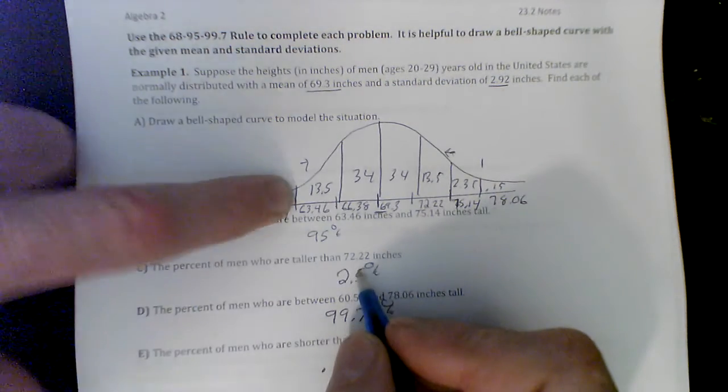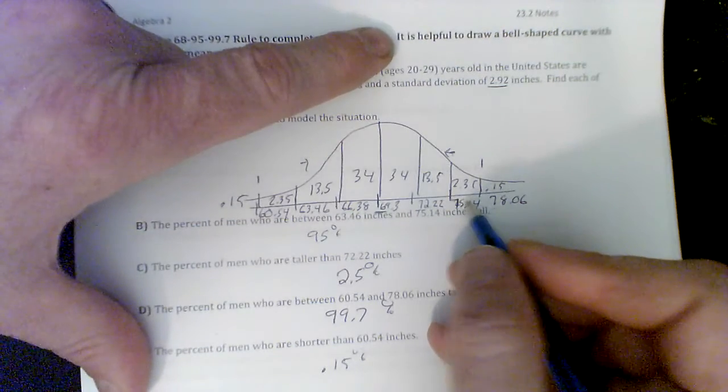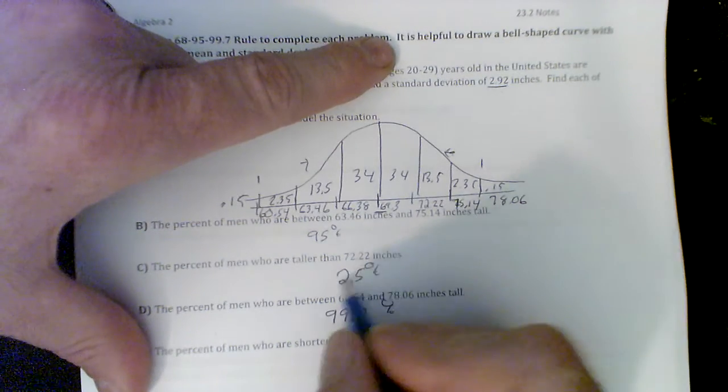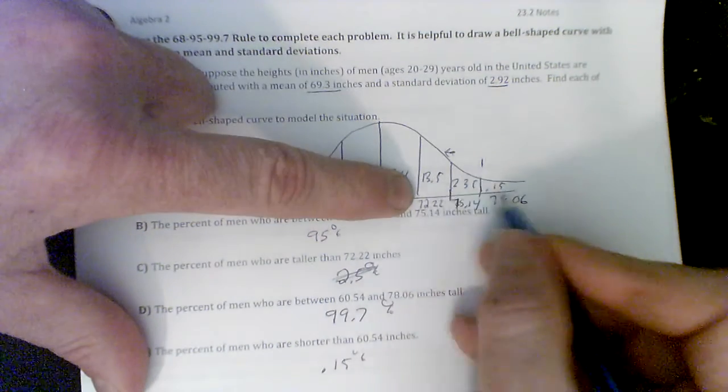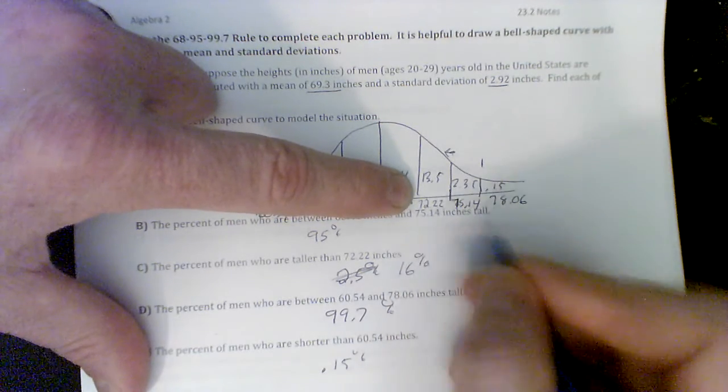Taller than 72.22 would be people up here. Oh, that's correct, and I did it wrong. It's everything up here. So that's 16% of the data.